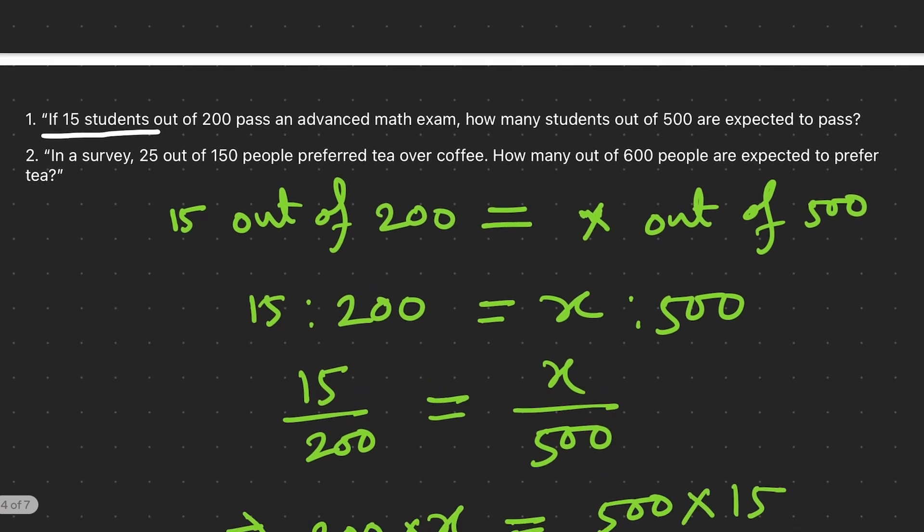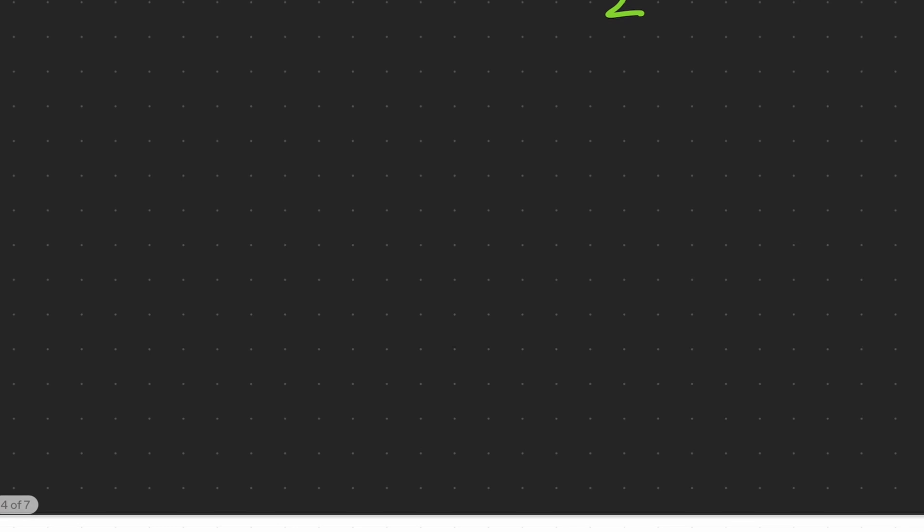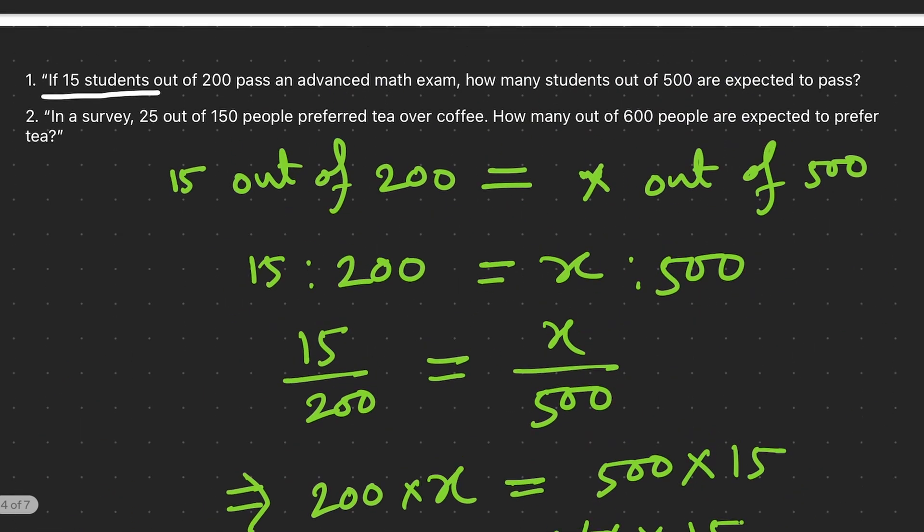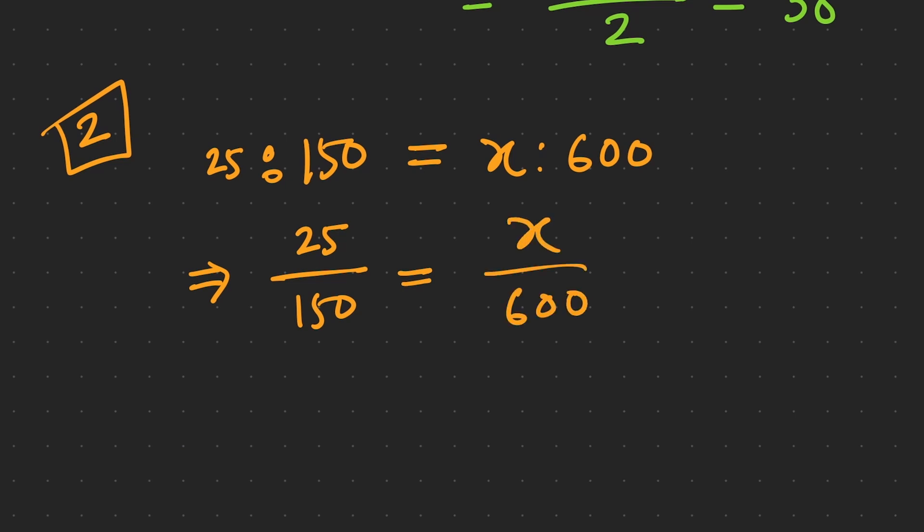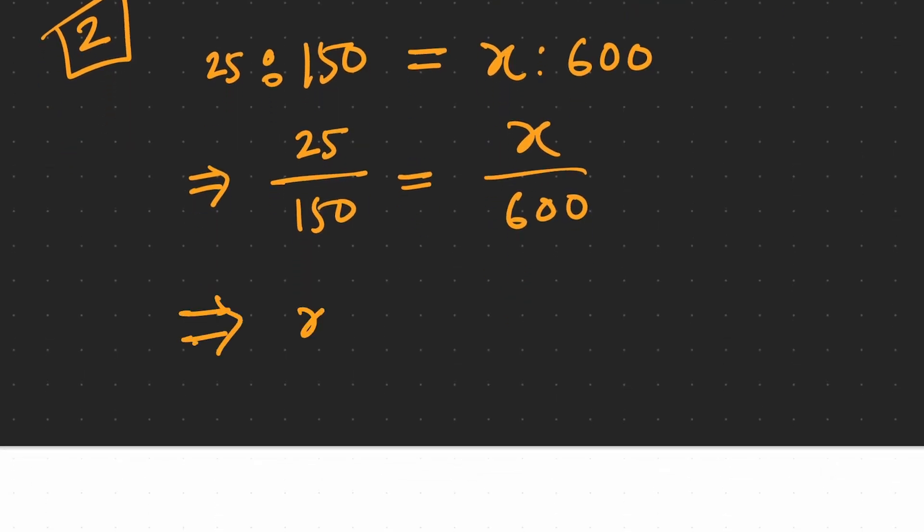So 25 people out of 150, and how many out of 600? Our second problem is 25 out of 150 equals x out of 600. Once again, we can solve this problem. We can write these ratios this way for better understanding: 25 divided by 150 equals x divided by 600. Then it becomes 150x equals 25 times 600. Now you can solve for x, so let me know the answer.